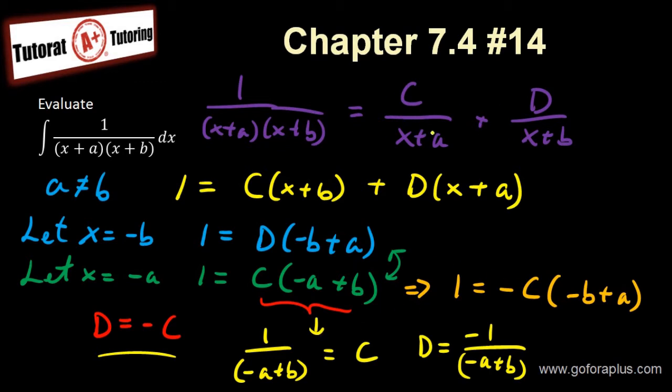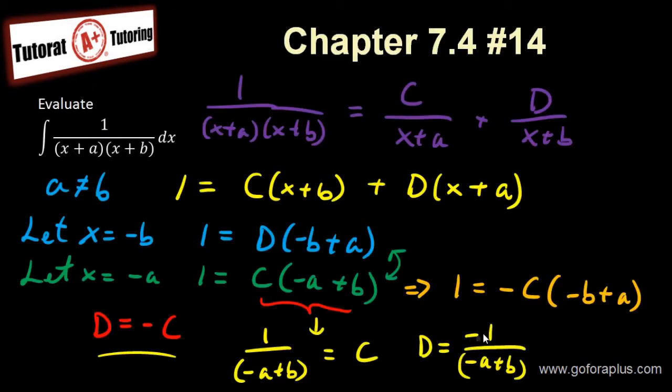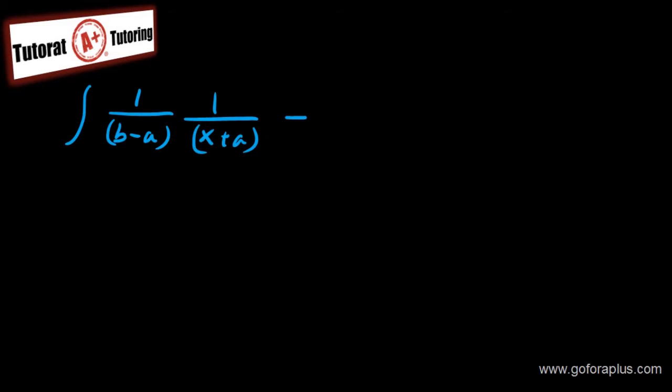So now that I have my fraction into two parts, I have my integral to be c, which is 1 over (b-a), and then I have my 1 over (x+a) minus, because my d is negative here. So I have minus 1 over (b-a) times 1 over (x+b). So this whole thing is dx. So I can separate this into two integrals. Now this is a constant here, b minus a. Now the integral of 1 over (x+a) is ln of (x+a), because we don't have any coefficient in front, so the answer is just ln of (x+a).